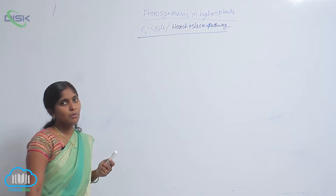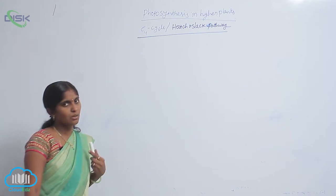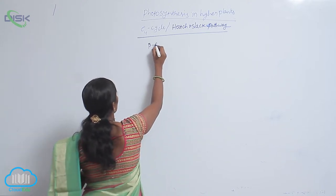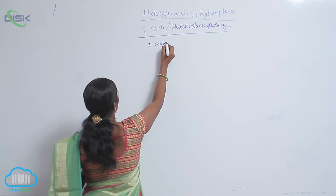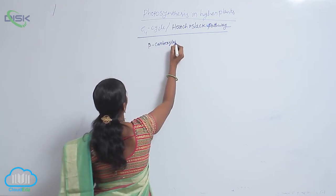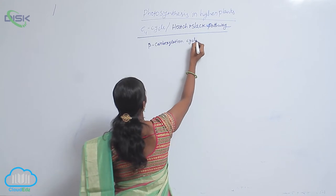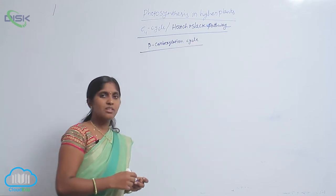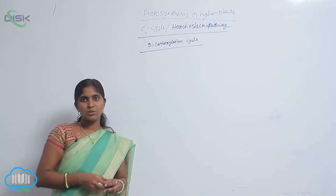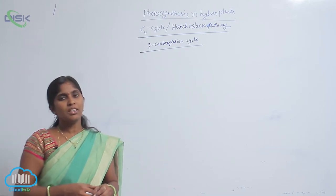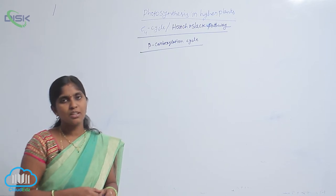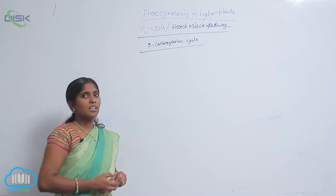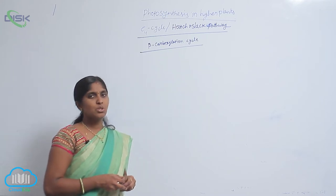In the C4 cycle, carboxylation reactions are carried out, and hence it is also called the beta carboxylation cycle. Professor C.V. Ramadhaz, who belongs to India, conducted experiments on C4 plants extensively. The C4 cycle was first discovered in the sugarcane plant.